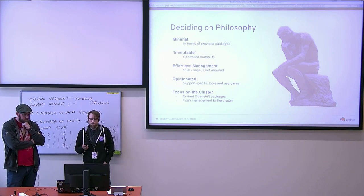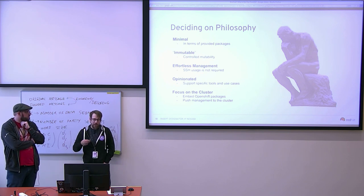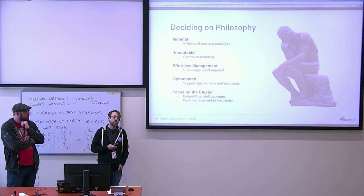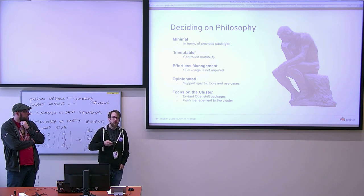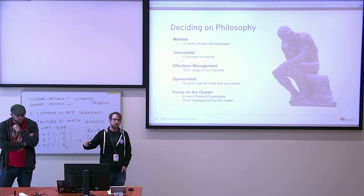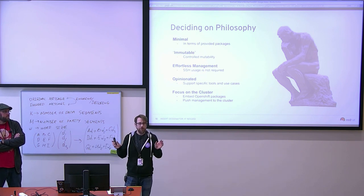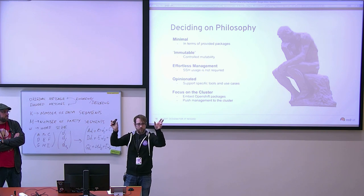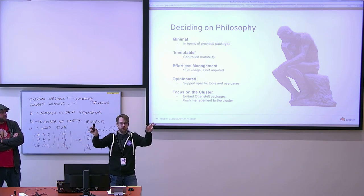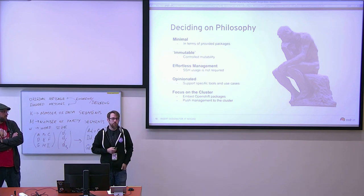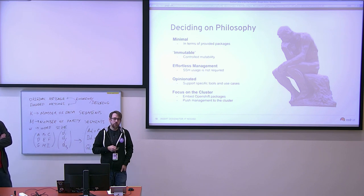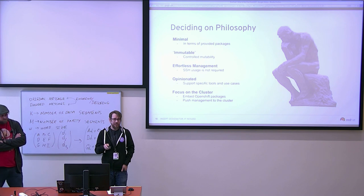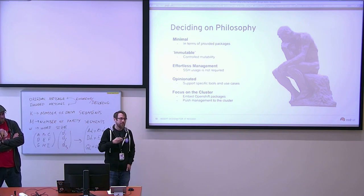The last philosophy point is focusing on the cluster. We embed the OpenShift packages and push management to the cluster — but it's not just that, we're also versioning with the cluster. Both Tectonic and Atomic had issues working with the clusters above because they were their own operating systems with their own use cases. Runtimes didn't always match, libraries didn't always match. By versioning the container runtime, the operating system, and the container scheduler altogether, we can continuously ensure they work in lockstep and all feel like one entity.